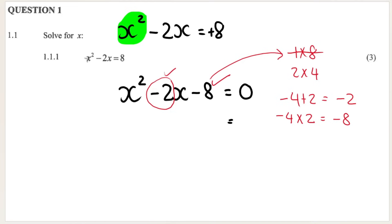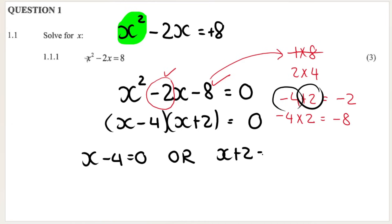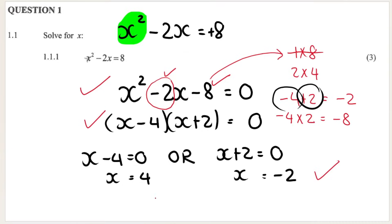Adding or subtracting gives the coefficient of x. So we factorize it as (x minus 4)(x plus 2) equals zero. Then x minus 4 equals zero, or x plus 2 equals zero. So our two solutions are x equals 4 or x equals negative 2. Two answers because we are dealing with a quadratic equation. We get a mark for putting it in standard form, a mark for factorizing, and one mark for both solutions being correct.